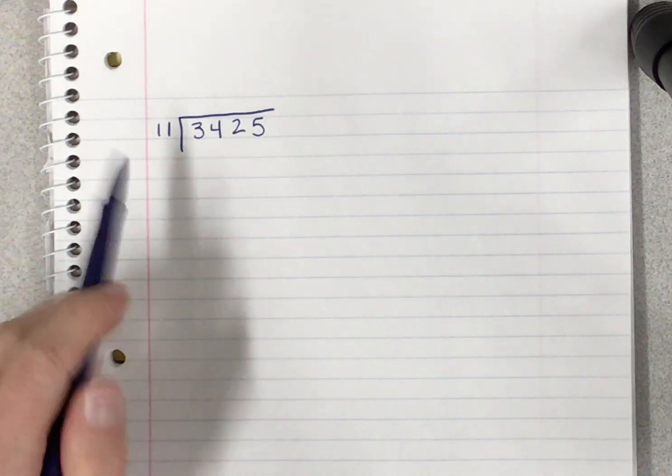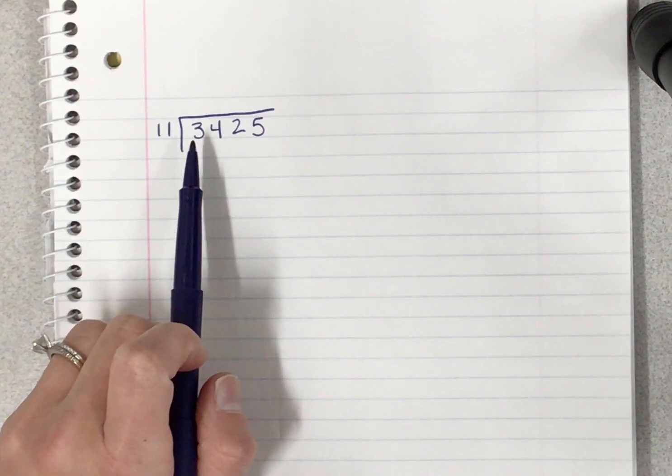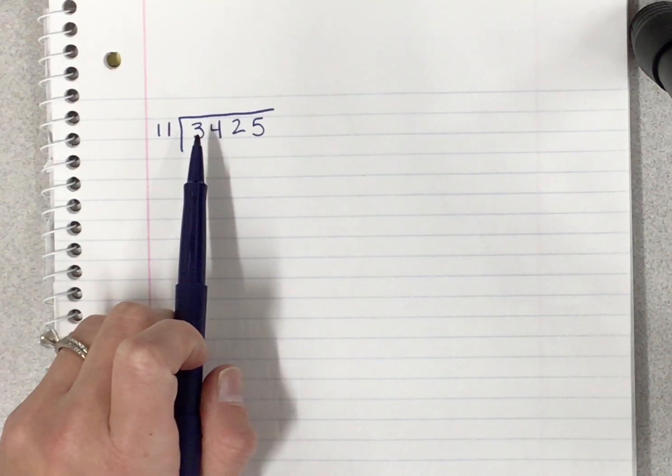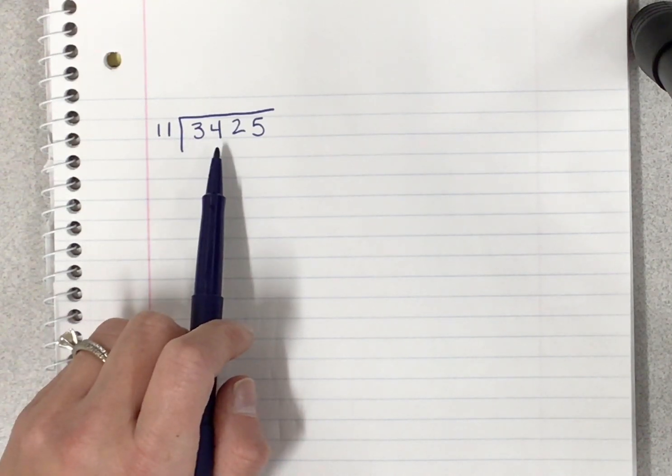We start by asking ourselves how many 11s can go into the first digit, 3. If the first digit we say, oh it can't go in, it would be zero times, then we can move to the second digit and think about how many 11s can go into 34.